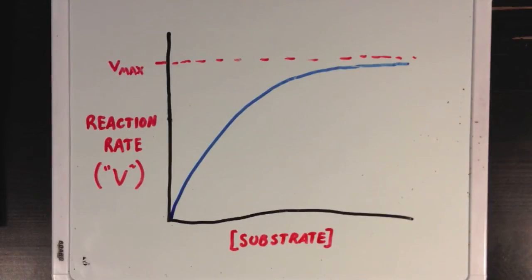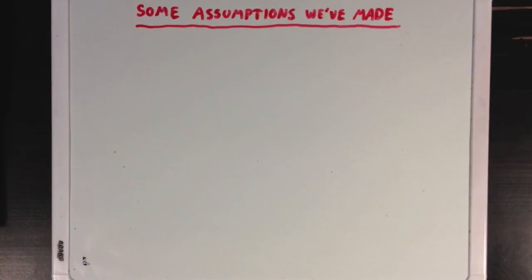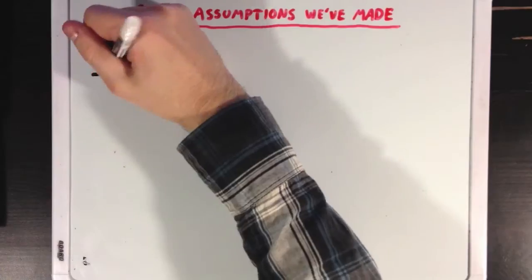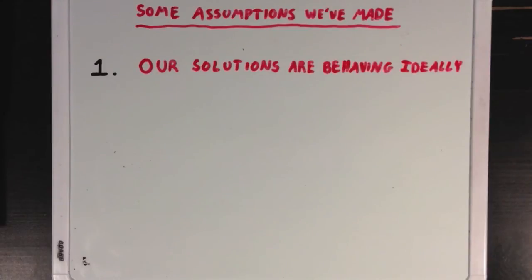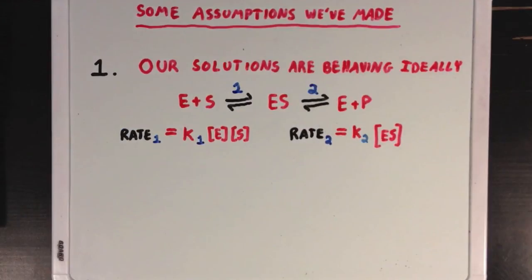When we think about enzymes and their kinetics this way, we've made a couple of assumptions about how our enzymes and substrates are behaving. The first assumption we've made is that our solutions are behaving ideally and that we can classify our enzyme's reaction into two distinct steps: first, the binding of substrate to enzyme, and second, the transition from substrate to product with the enzyme's help. By assuming that our solutions are behaving ideally and that we don't have any external factors messing things up, we can simplify our discussion of kinetics quite a bit.